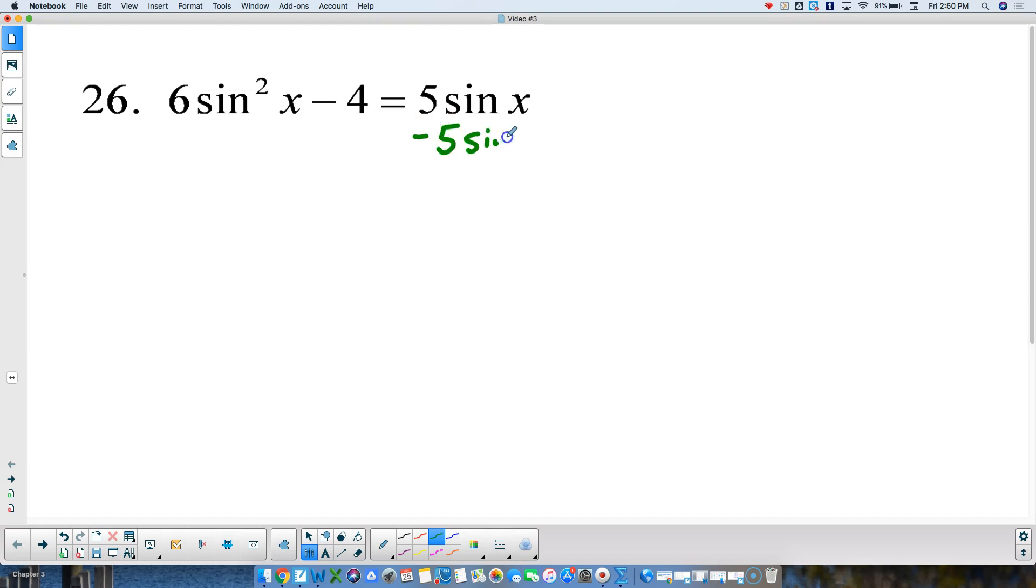So I'm going to subtract 5 sine of x from both sides. That leaves me then with 6 sine squared of x minus 5 sine of x minus 4 equals 0.